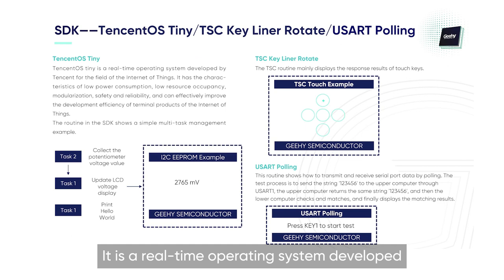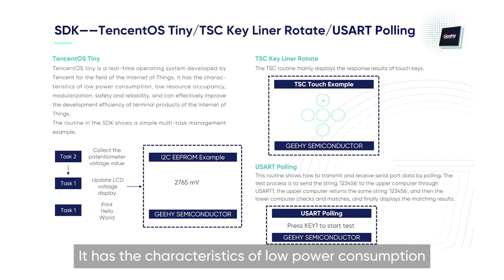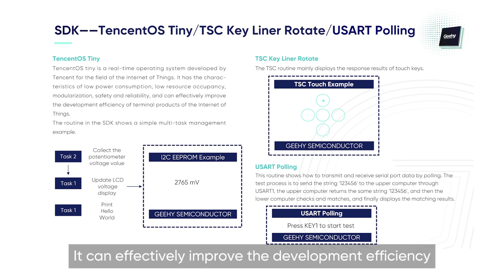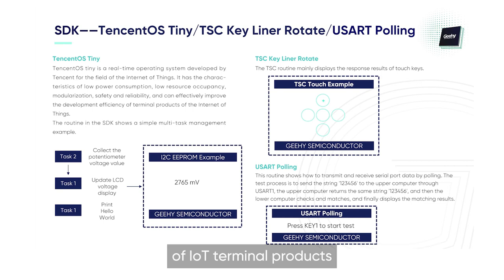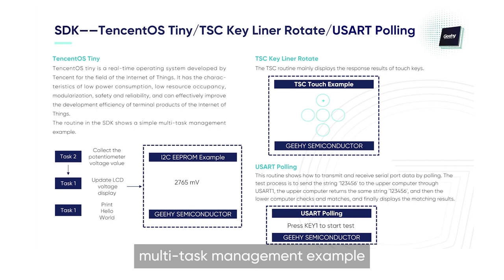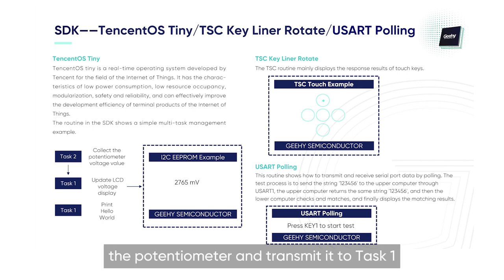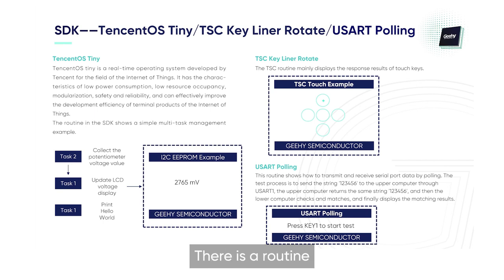Here we can see the Tencent OS Tiny. It is a real-time operating system developed by Tencent for the field of the Internet of Things. It has the characteristics of low power consumption, low resource occupancy, modularization, safety, and reliability. It can effectively improve the development efficiency of IoT terminal products. The example in the SDK shows a multi-task management example. Task 1 is to update the voltage display of the LCD and print hello world. Task 2 is to collect the voltage value of the potentiometer and transmit it to task 1, and finally display it on the menu.